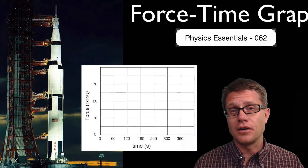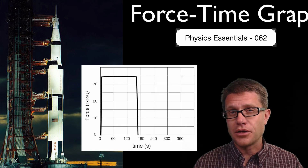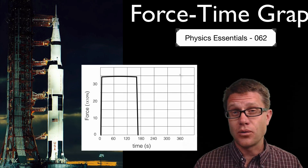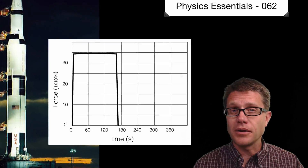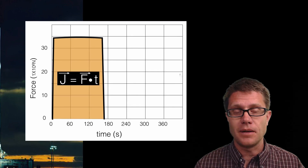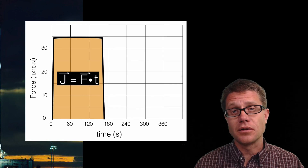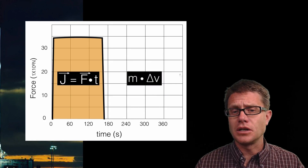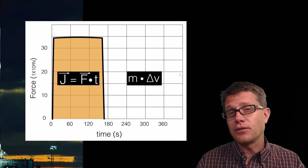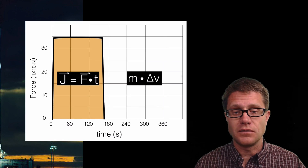If we were to draw a force-time graph of that first stage, it would look like this — a 34 million newton force applied for about 165 seconds. The area underneath that graph is equal to the impulse, which we use J to represent. It is the force applied and how long it is applied, and as we learned in earlier videos, that is equivalent to the change in momentum, or mass times the change in velocity.